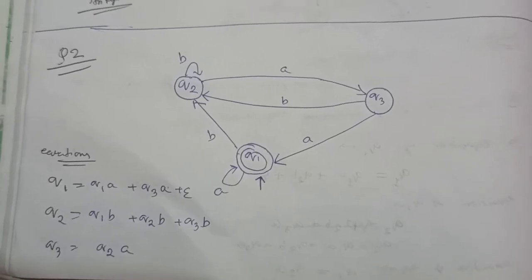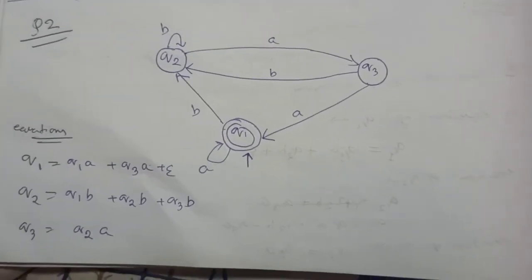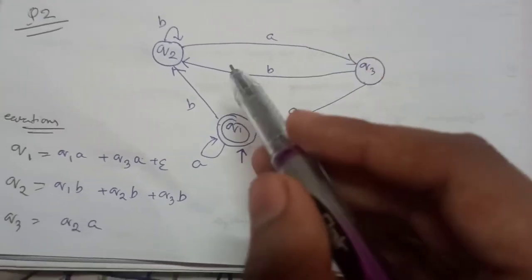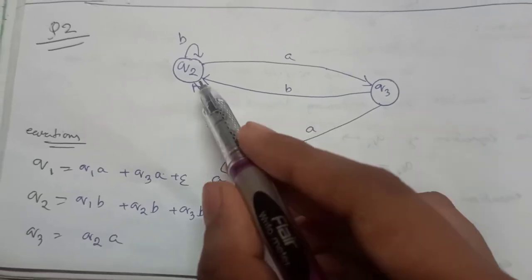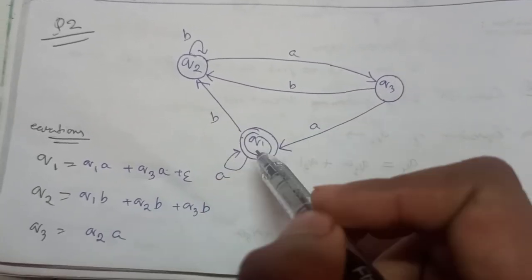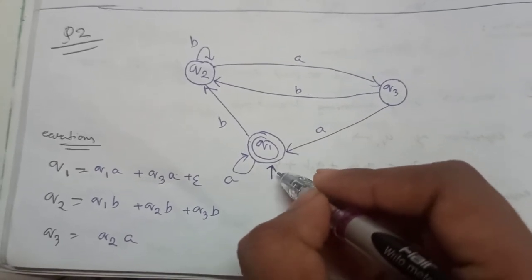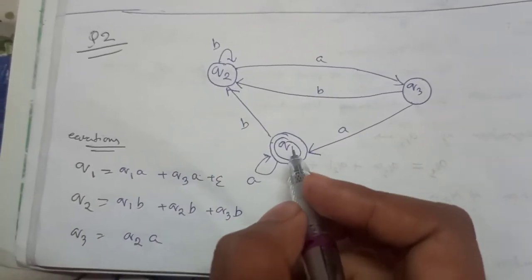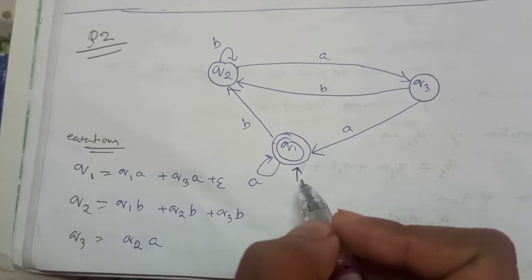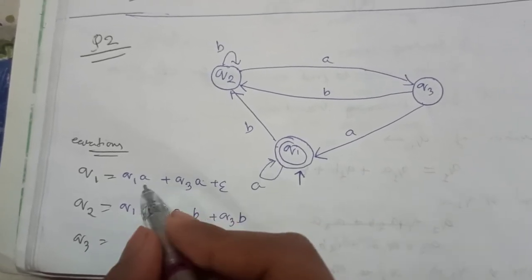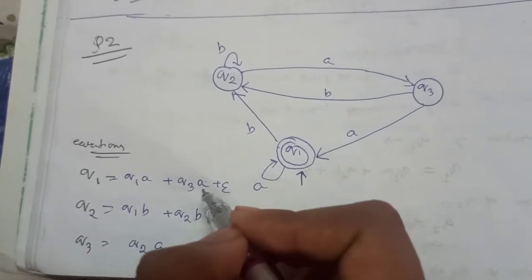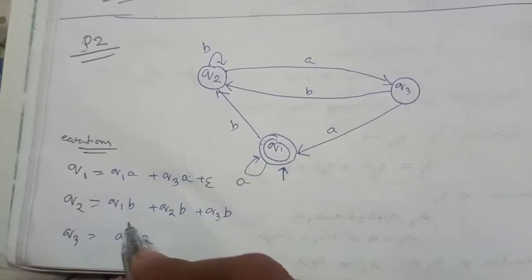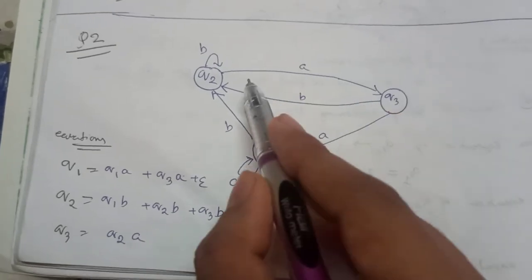Now a second example. Here we also have three states Q1, Q2, and Q3, but here it is different because the initial state is also the final state. The equations are: Q1 = null + Q1A + Q3A, Q2 = Q1B + Q2B + Q3B, and Q3 = Q2A.